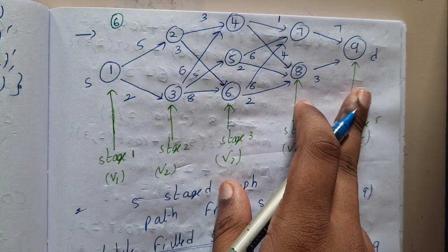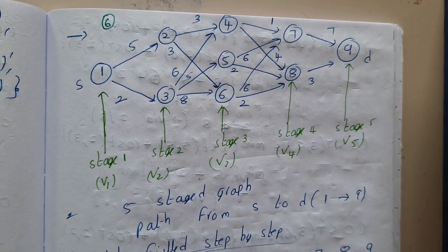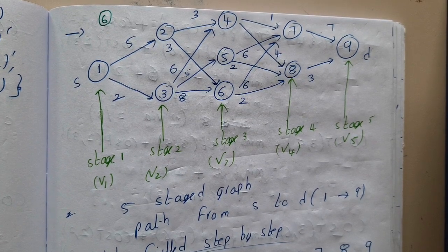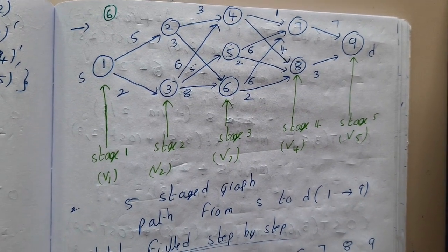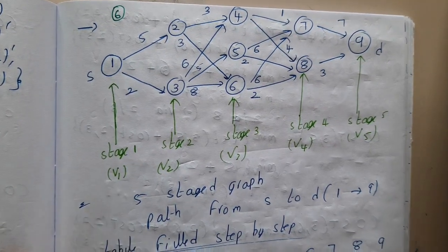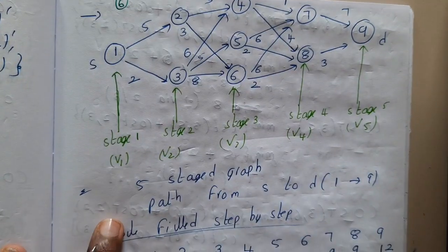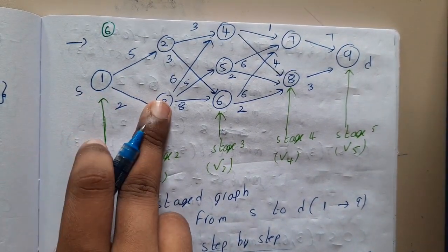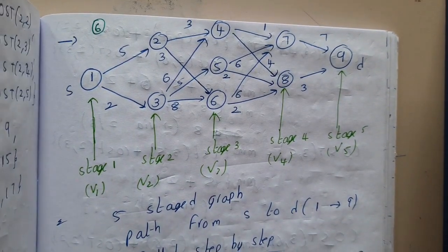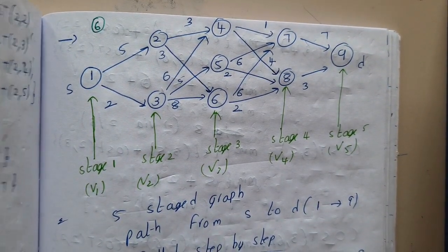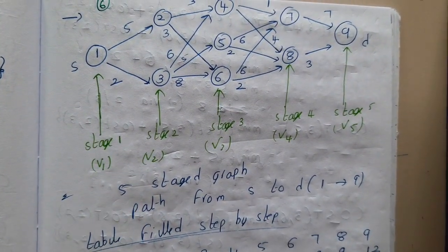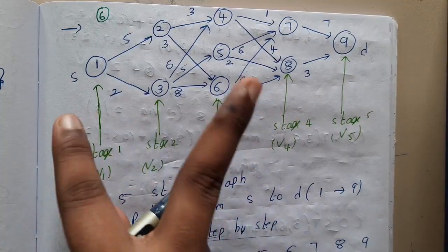This is the multi-stage graph and the question specifically asks to use the backward approach. If the question specifies forward or backward approach, you must use only that method. The graph has stage one, stage two, stage three, stage four, and stage five — a five-stage graph with nine vertices, whereas the previous one had twelve vertices.